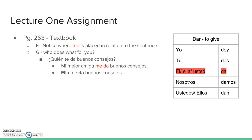Here are some extra examples not in the book. If you haven't already, look at page 263 in your textbook, exercise F, and notice where 'me' is placed in relation to the sentence. Then look at exercise G and answer those questions about who does what for you. Chapter 11 focuses a lot on me and te — you do this for me, and I do this for you. For example: ¿Quién te da buenos consejos? — Who gives you good advice? Mi mejor amiga me da buenos consejos — my best friend gives me good advice. Ella me da buenos consejos. Thank you for watching.